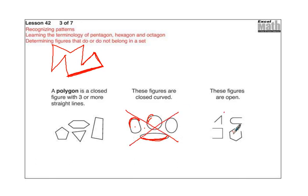And these shapes are open. This has straight sides, but we have an opening right here. This has a curved side and it has an opening. Straight sides with an opening. So these are not polygons. These are not polygons. These are not polygons. These are polygons. Anything with straight sides.